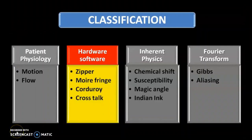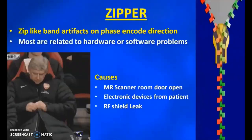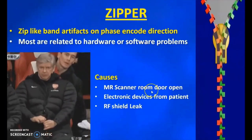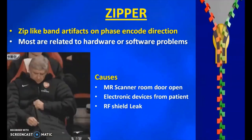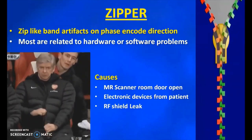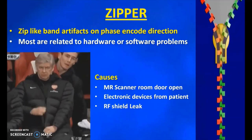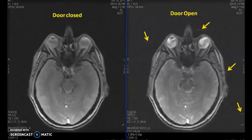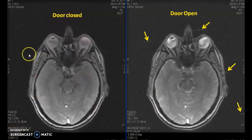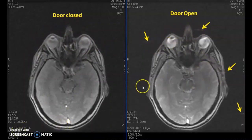Another classification is hardware or zipper-related artifacts. The zipper artifact is caused by an open MRI scan room door, or some faulty electrical devices from the patient or inside the room. Fused bulbs inside the room can also cause a zipper type of artifact. As an example, I did the three-plane localizer with the door closed — no artifact was seen. Then I kept the door open and repeated the same sequence, and the zipper-like artifact was seen.